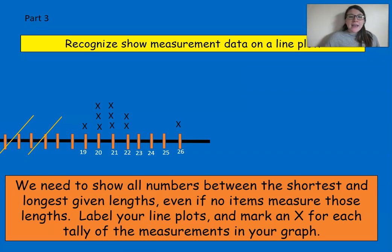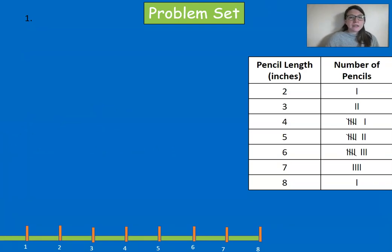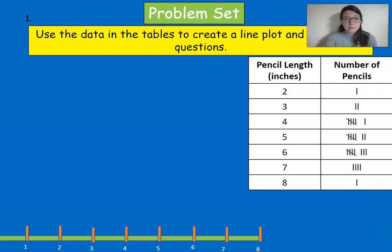Then for your problem set today, what you're going to be doing is taking data that I give you and turning it into a line plot. Again, same thing. Each tally mark is a person. Each tally mark is a measurement. In this case, each tally mark is a pencil. So I'm seeing 1 for 2 inches, 2 for 3 inches, 5 inches has 7, 6 inches has 8, 7 inches has 4, and 8 inches has 1. And that's our line plot. Just taking the data from the table, turning it into a line plot. I can't wait to see your shoe measurements for your line plot and your other line plots that you create during this lesson. Nice job!